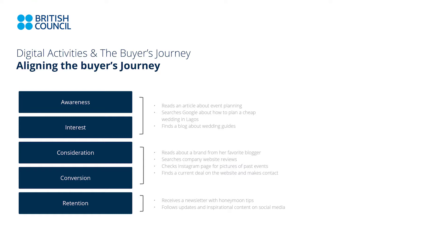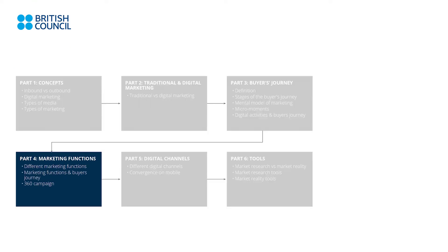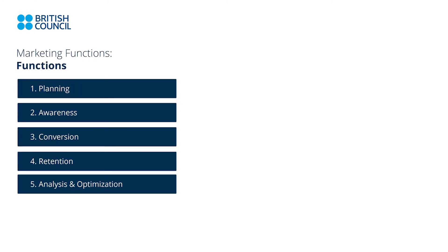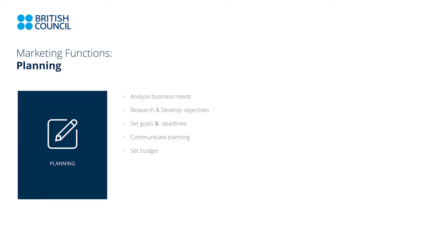That's the buyer's journey — we talked about the different stages: awareness, interest, consideration, conversion, and retention. We talked about the mental model, where there's now the ZMOT model — the zero moment of truth. We talked about micro moments. Now let's talk about marketing functions and how they relate to your buyer's journey. There are five different marketing functions: planning, awareness, conversion, retention, and analysis and optimization. For planning, you're analyzing your business needs, doing research — business, industry, competitor, and target audience research. You're developing communication objectives, marketing objectives, business objectives, setting goals, setting deadlines, and setting your budget.